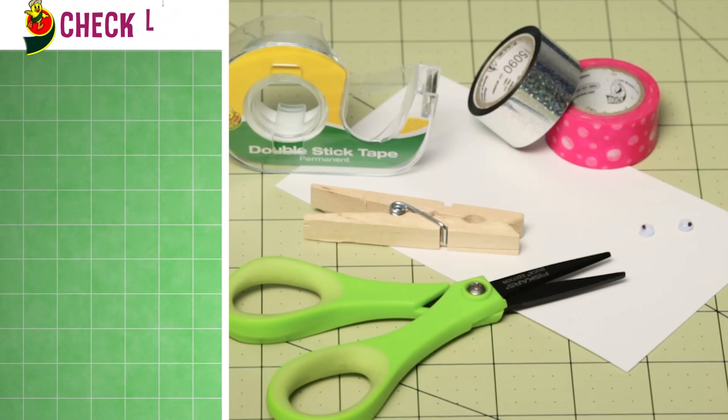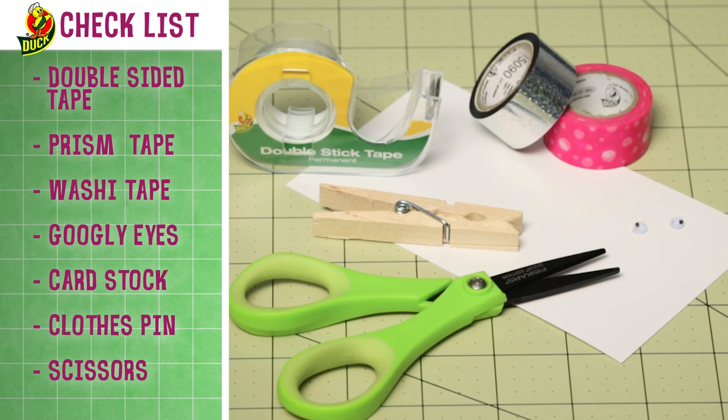The supplies you will be needing for this craft are double-sided tape, prism tape, washi tape, googly eyes, cardstock, a clothespin, and nonstick scissors.